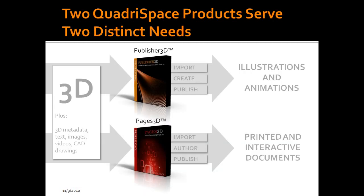The first product, Publisher 3D, takes the 3D information and is used to generate illustrations and animations — you're really working with just the 3D in Publisher 3D. In Pages 3D, you're able to take the 3D, the metadata, images, and all kinds of textual information, and from there author complete documents. Pages 3D supports both interactive and printed documents for your final releases.